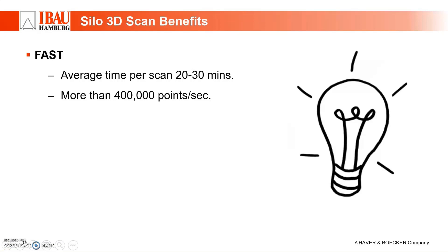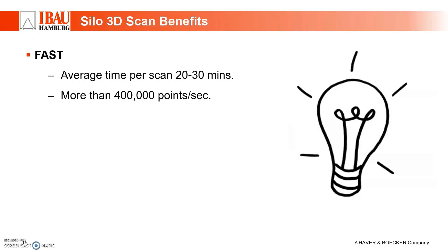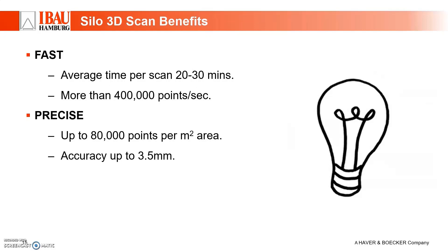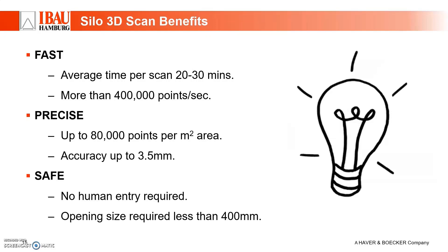To sum up, here are the key benefits of our service. Our device is very fast — it scans up to 400,000 points per second, and our post-processing is seamless, meaning you have results soon with no long stoppage window required. Precision: being fast without jeopardizing accuracy is key. There are approximately more than 80,000 points per square meter, giving you a measurement accuracy up to 3.5 millimeters. It is also a very safe process — no human entry into the silo is required — and you don't need a big opening; a 300 to 400 millimeter opening is more than sufficient.